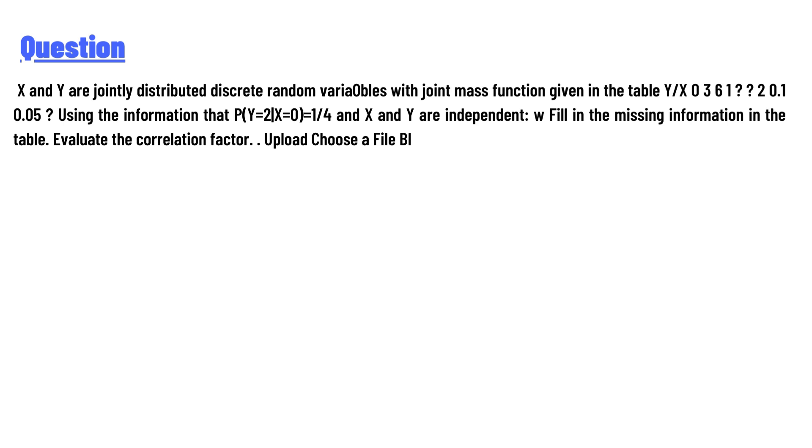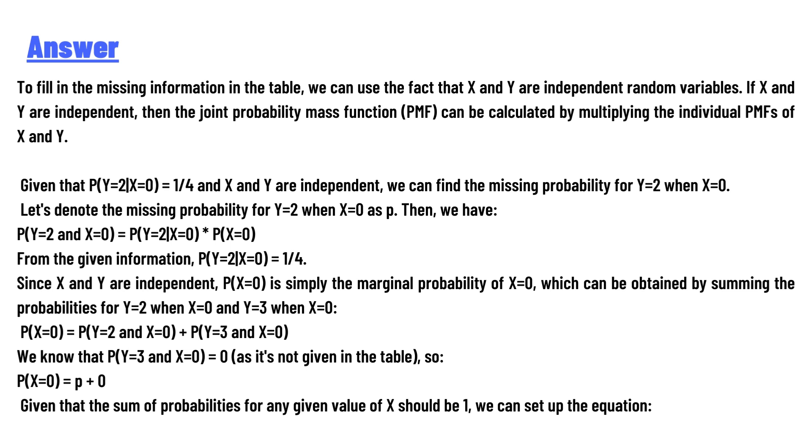To fill in the missing information in the table, we can use the fact that X and Y are independent random variables. If X and Y are independent, then the joint probability mass function (PMF) can be calculated by multiplying the individual PMFs of X and Y.